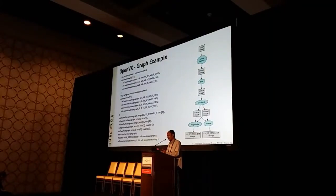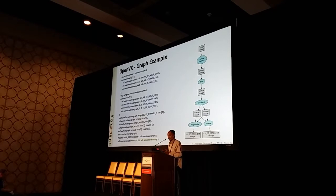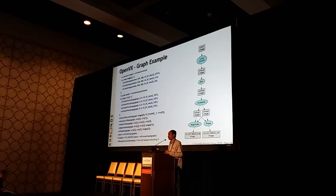You can see a graph getting constructed here. At the end of constructing the graph, it simply calls verify graph once just to see there are no errors. And once the graph is verified, you can see the process graph call, where you can actually call it multiple times to run it several times for each image that comes through.